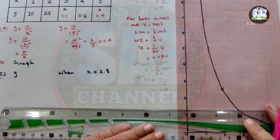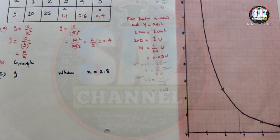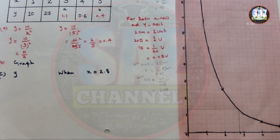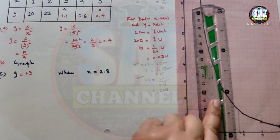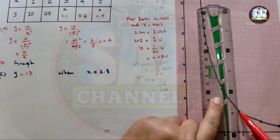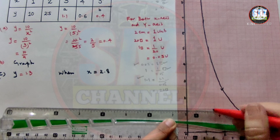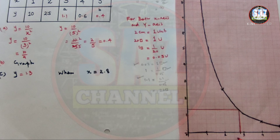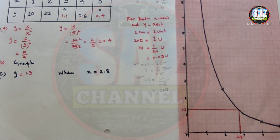From x = 2.8, reading across to the y-axis, we get approximately 6 small blocks after 1. Since each block = 0.05, that gives 6 × 0.05 = 0.3, added to 1 = approximately 1.3. So when x = 2.8, y ≈ 1.3.